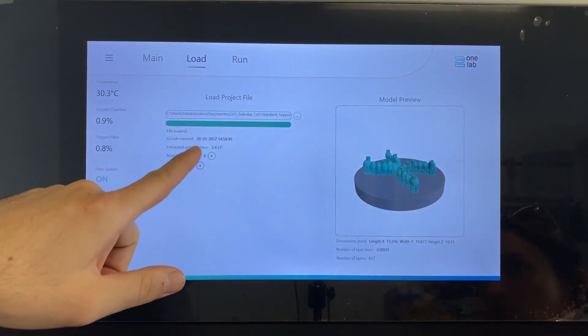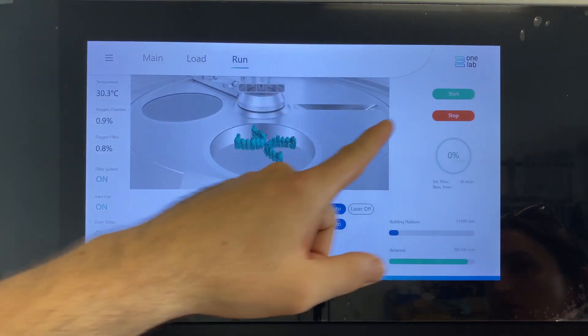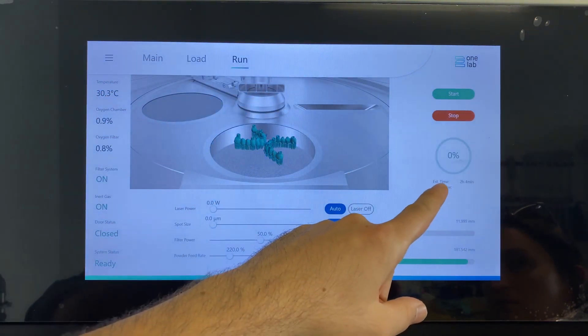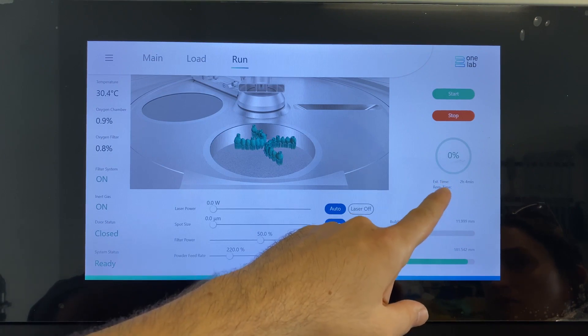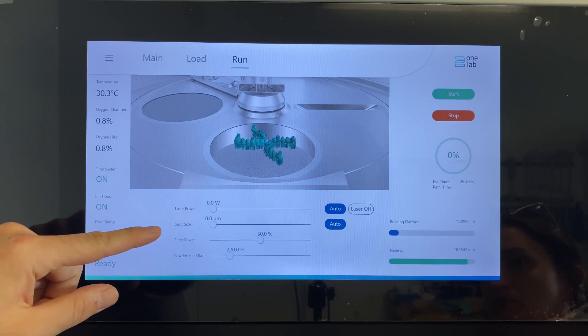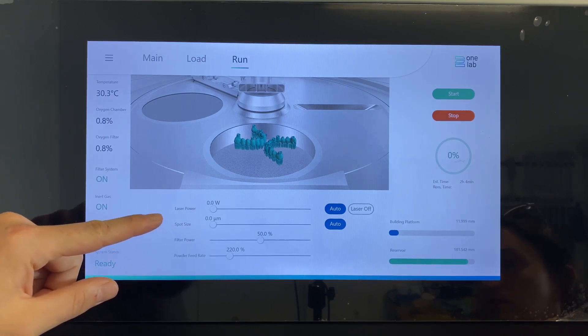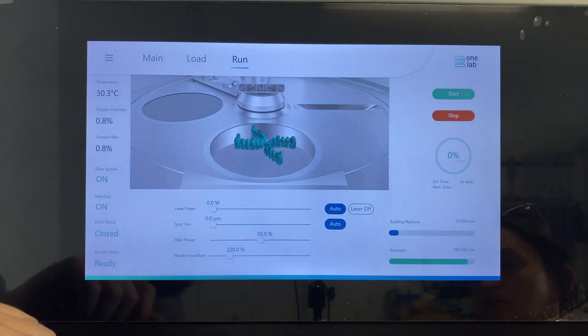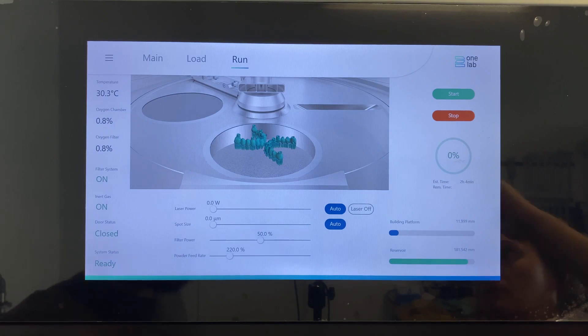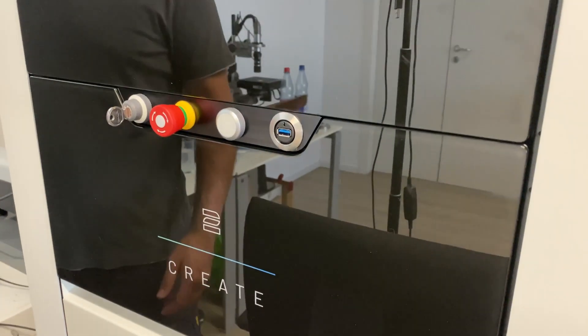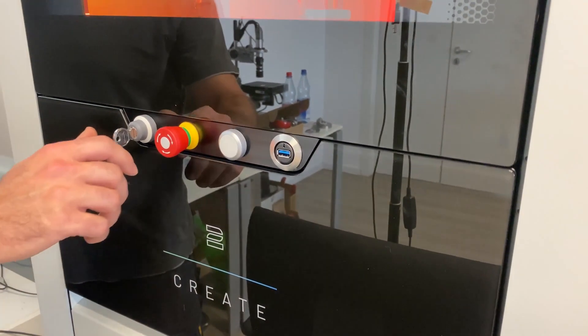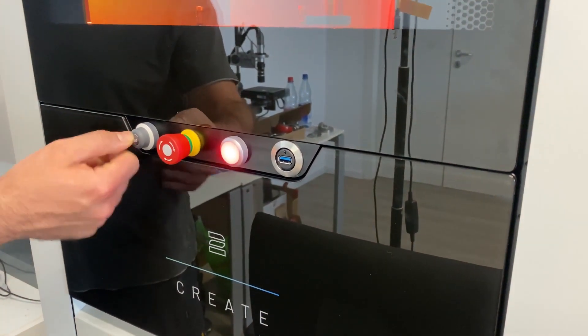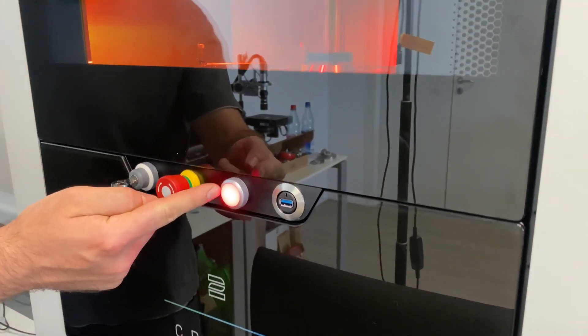Our job is loaded and we can start our printing job. Here you have an estimated time how long the job will print and below that is the remaining time. Laser power and spot size are regulated from our G-code. Everything else is already pre-programmed. The last step before we can start our print is to activate the laser. And then we press start.